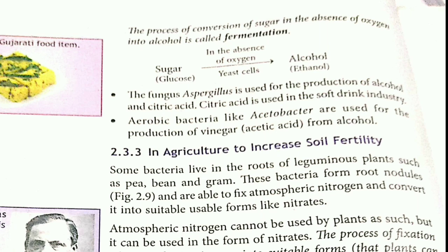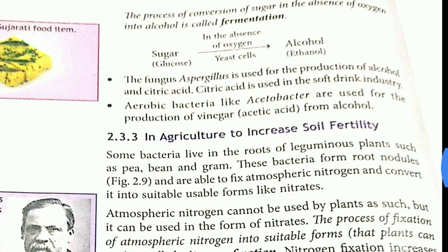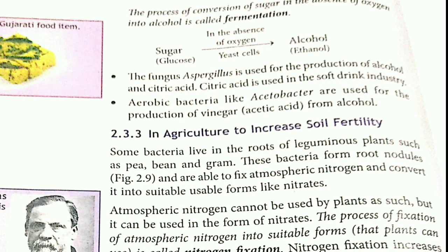Then there is citric acid. You must have tasted vinegar — citric acid and vinegar are types of acids that you can safely eat. Citric acid is mostly present in sour substances like lemon, orange, and unripe mango. The aerobic bacteria Acetobacter is used in the formation of vinegar, also called sirka at home. That is acetic acid mixed with water which forms vinegar. From alcohol we can also prepare many other things, including cough syrups. So microorganisms are useful both at home and in industries.